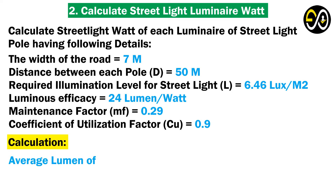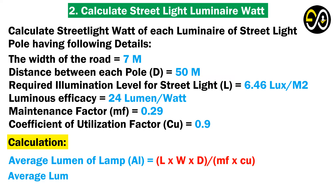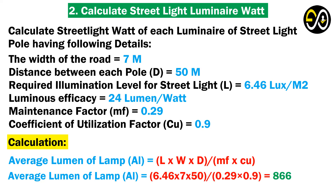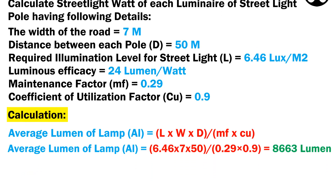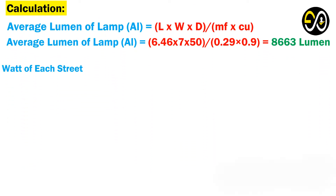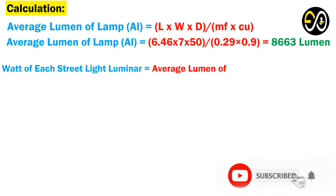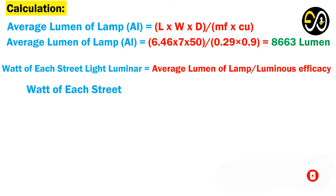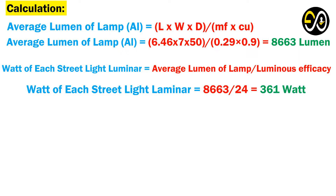Calculation: Average lumen of lamp equals L times W times D, over MF times CU. Average lumen of lamp equals 6.46 times 7 times 50, over 0.29 times 0.9, equals 8,663 lumens. Watt of each street light luminaire equals average lumen of lamp over luminous efficacy, which equals 8,663 over 24, equals 361 watts.